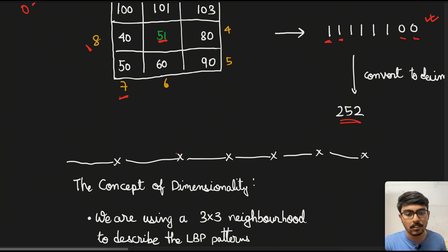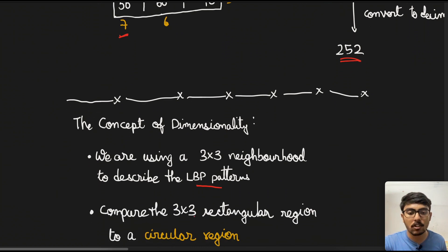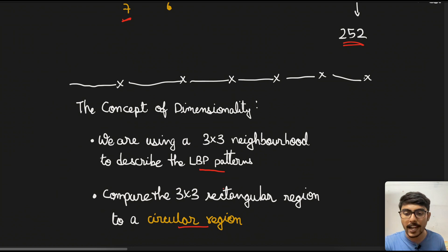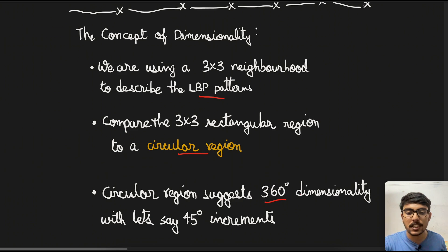Now we come to the next part, which is the concept of dimensionality. Dimensionality basically comes from the fact that LBP can be transformed from a rectangular shape into something more circular. Suppose we are using 3x3 neighborhood to describe the LBP patterns. What we can do is compare the 3x3 rectangular region into a circular region. When we count in the circular part of dimensionality, we get more angles to calculate from.